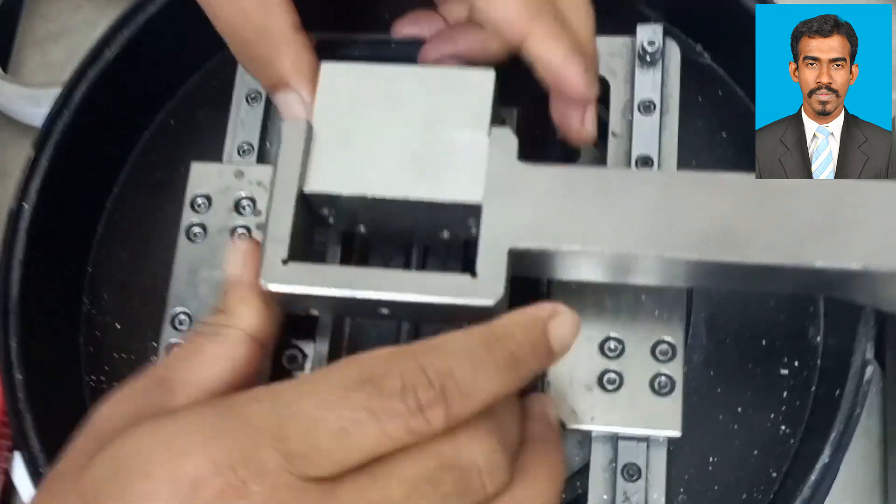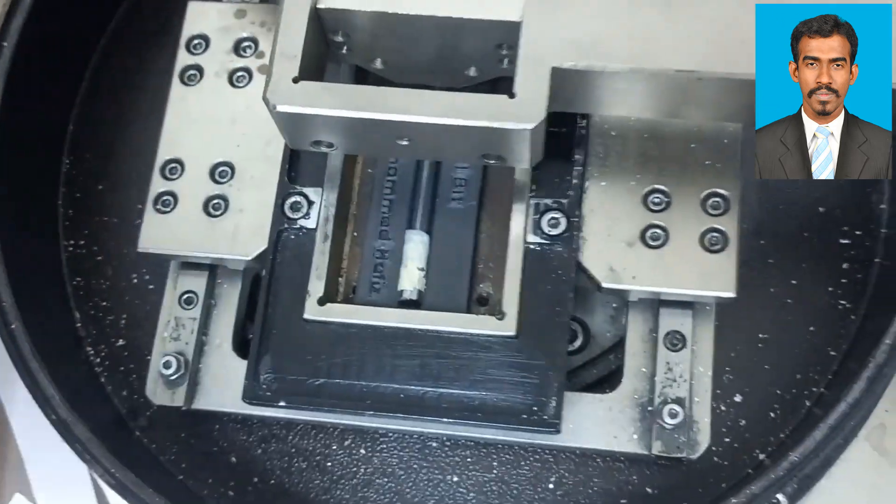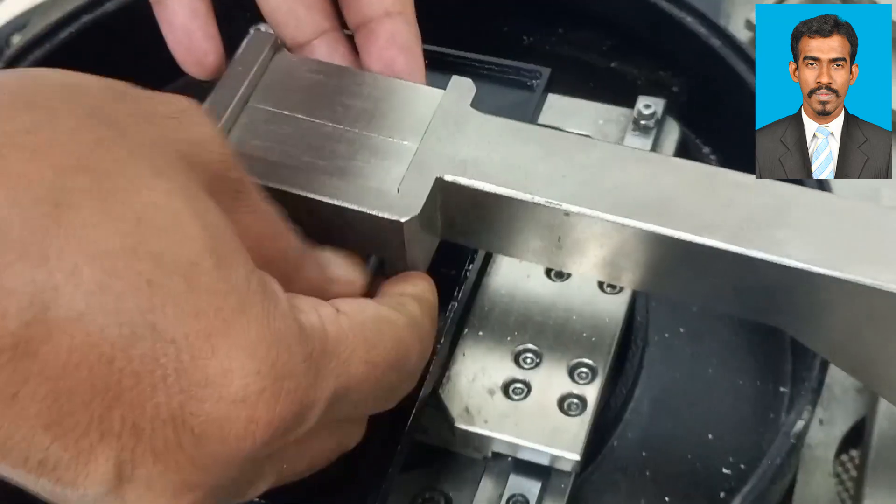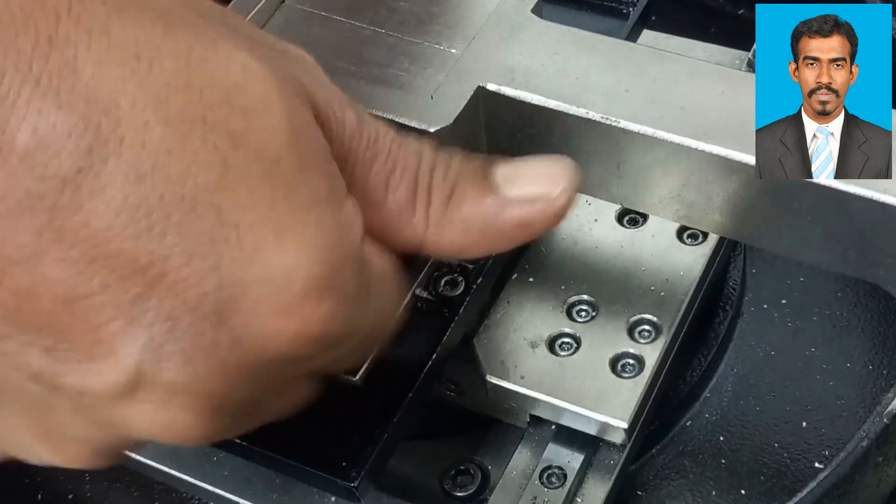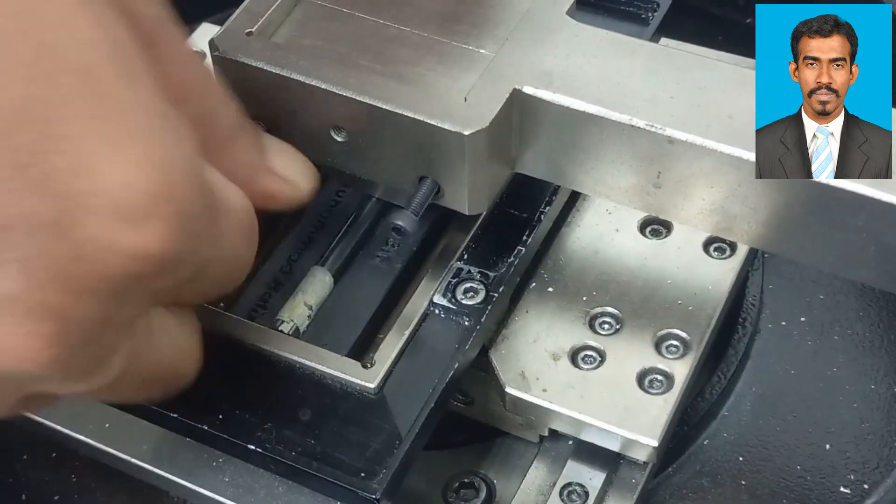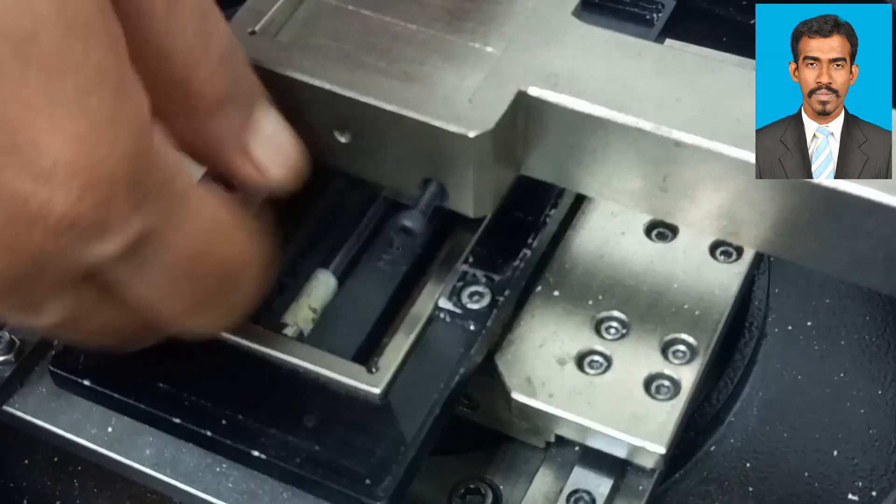When fixing the ball above the specimen, we need to ensure that the ball and the specimen are in contact. If we are going to test the coefficient of friction, they need to be in contact with each other.